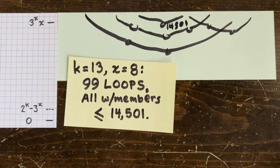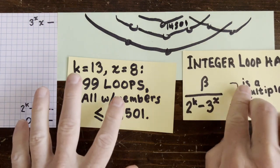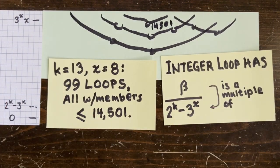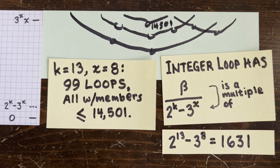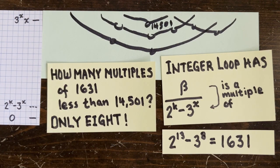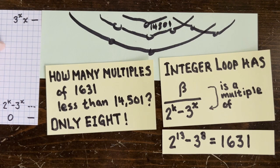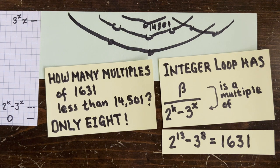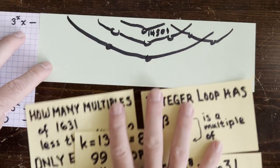Now, every member of every loop takes the form beta, which we're plotting here, over 2 to the k minus 3 to the x, which in this case is 1631. So how many multiples of 1631 are less than 14,501? Only 8. So out of the 99 total loops, at most 8 of them can be integer loops. Of course, none of them are, but this should give us the feeling that maybe very few operation sequences could even conceivably lead to integer loops. So let's try to prove that.